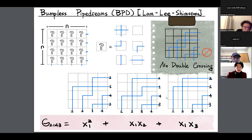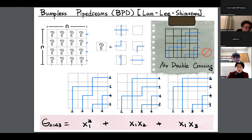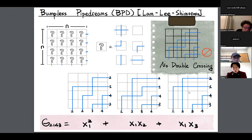We can also use bumpless pipe dreams to compute Schubert polynomials. This time the grid is a square and every tile has six options. Pipes enter from the bottom and go to the right, and again two pipes cannot cross more than once. We look at blank tiles: a blank tile in row i gives an x_i. So here we get x_1 squared, x_1 x_2, and x_1 x_3, and adding them up gives the Schubert polynomial of 2143.